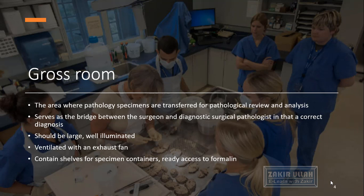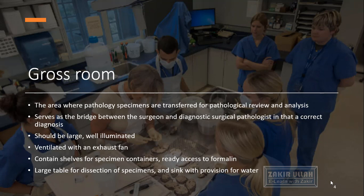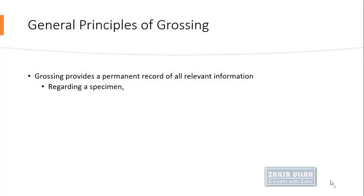The gross room has shelves for containers, and formalin is easily available so that if any specimen requires formalin, or if the formalin is insufficient, or needs to be changed, it can be easily accessed. Along with all these facilities, the gross room has a very large table for dissection of specimens, and a sink is provided for water.